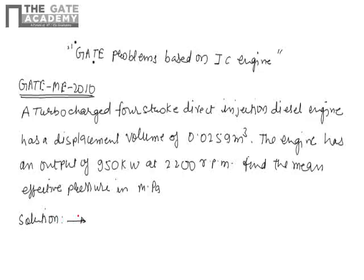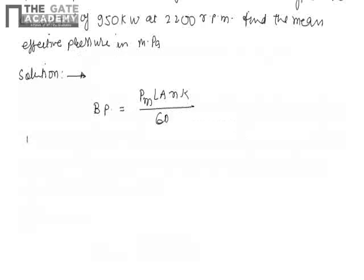As we already discussed in theory, whenever power is given in the problem it will be the brake power. We have a formula for indicated power; a similar formula can also be used for brake power. Brake power equals P_M times L times A times small n times K, divided by 60.